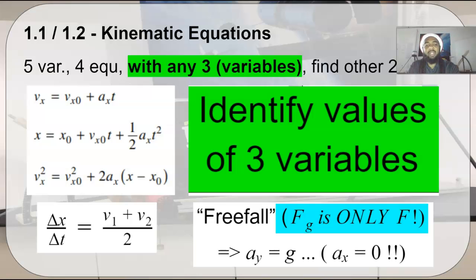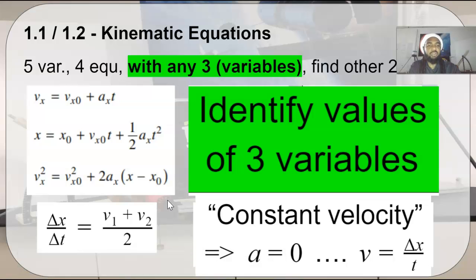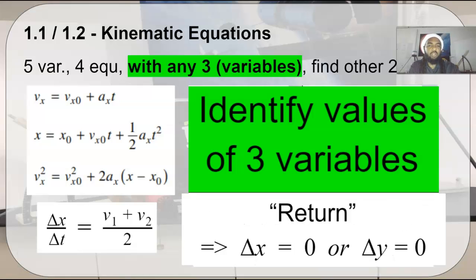There's no acceleration in your x direction if x is horizontal and f_g is the only force because f_g acts vertically. Constant velocity means that there's no acceleration, so you can use your v is equal to delta x over t for that one, and return. If something returns to where it began, this implies that its displacement is zero. So, if that's in the x direction, delta x is zero. If we have a projectile that is shot and returns, or if you are asked where does it land, if it was shot from the surface of earth, that is implying that it left the surface of earth and returned to the surface of earth, so that tells you that delta y is zero.